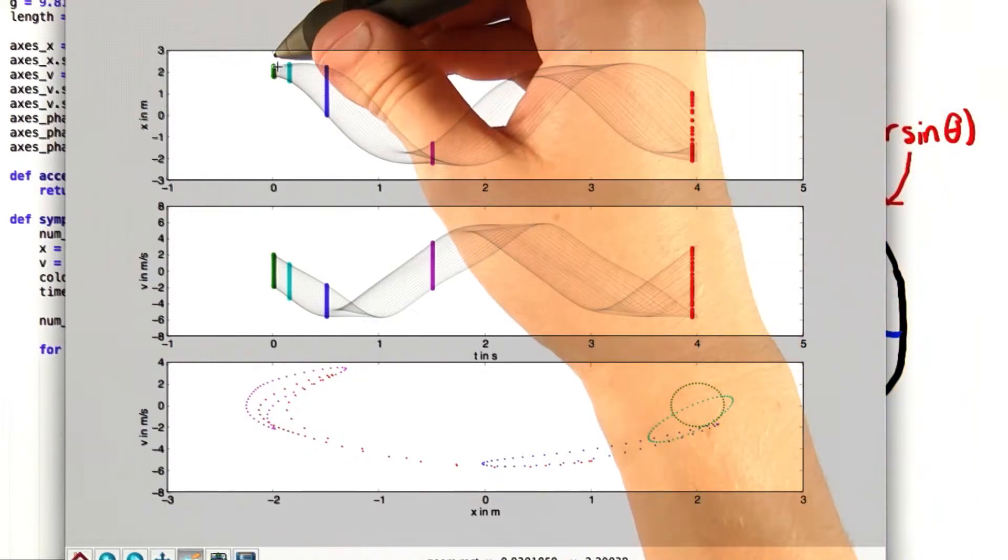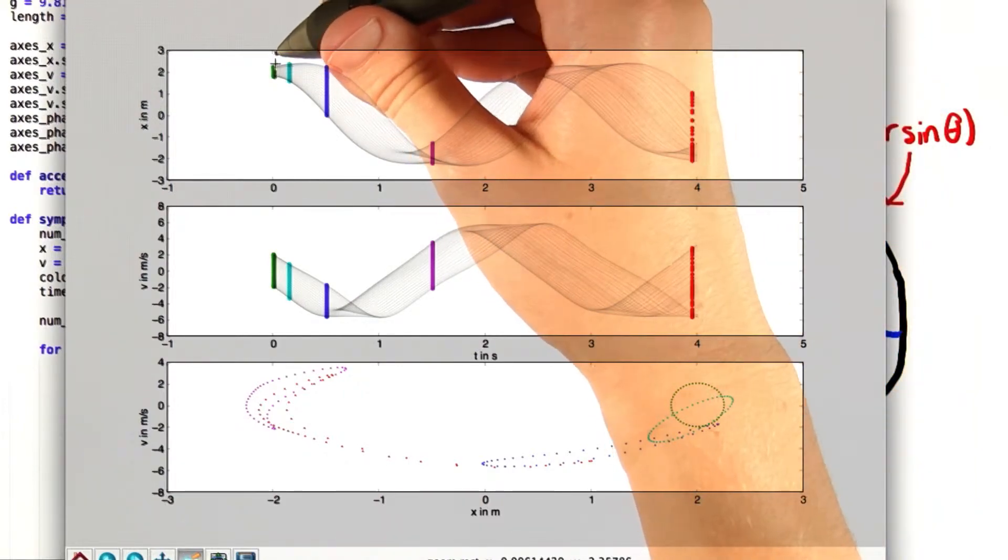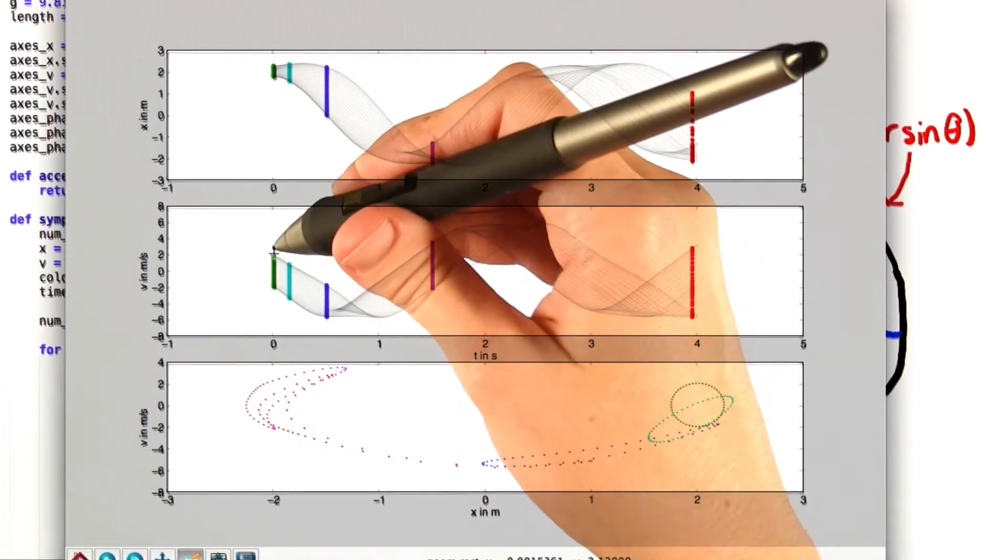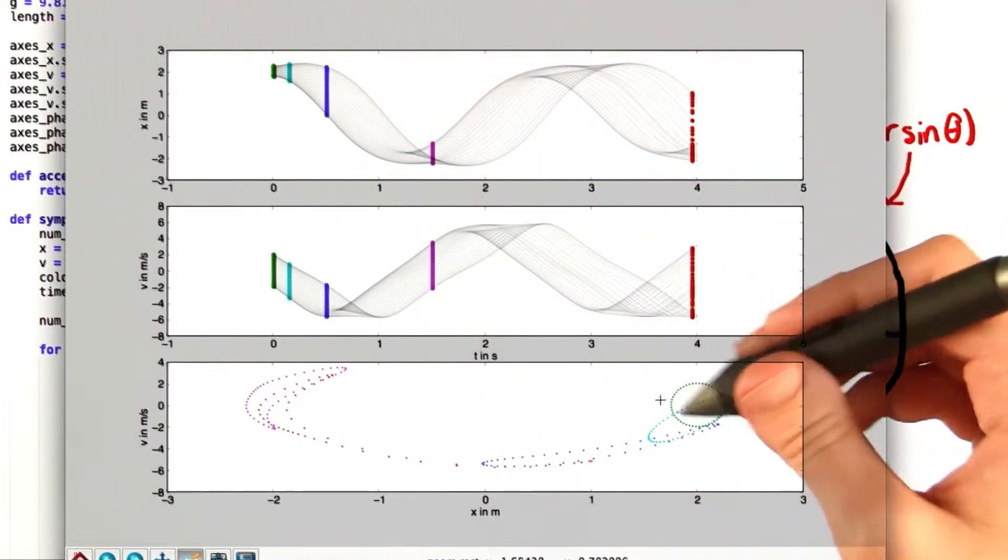So we can see that our initial values of x go from 1.75 to 2.25, and v from negative 2 to 2. So that corresponds to this green ellipse right here.